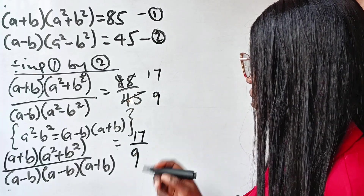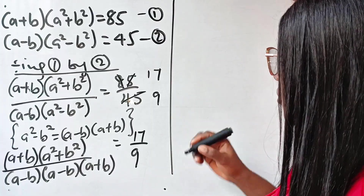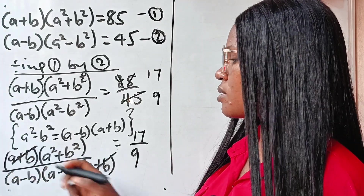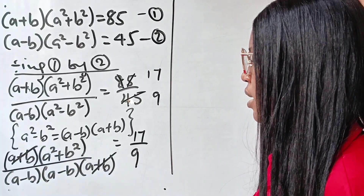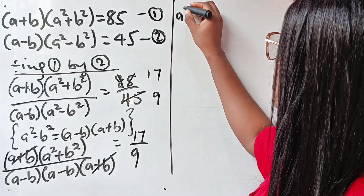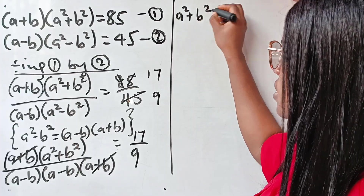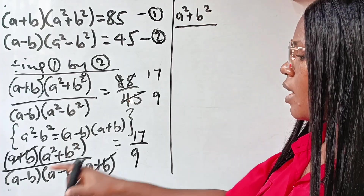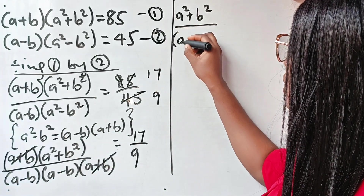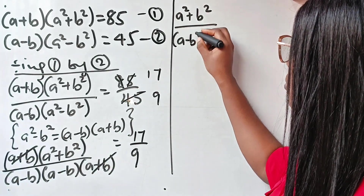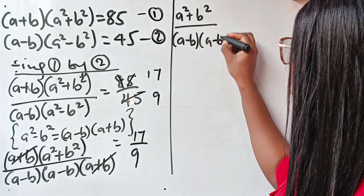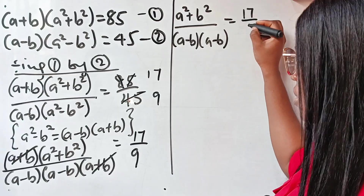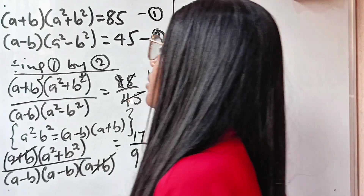This is the same as 17 divided by nine. So a plus b cancels a plus b, and we are now left with a squared plus b squared divided by a minus b, divided again by a minus b, which is equal to 17 over nine.